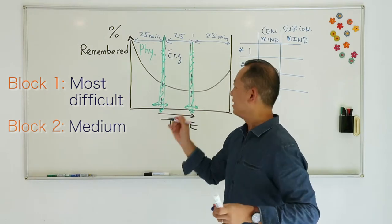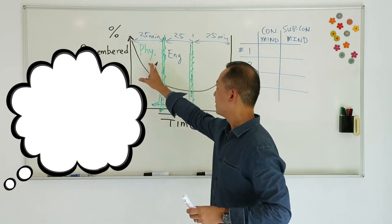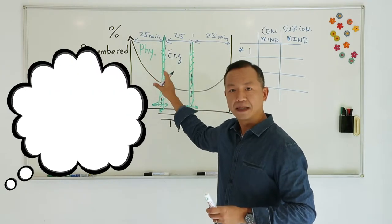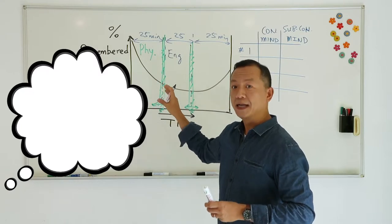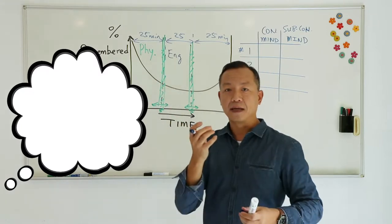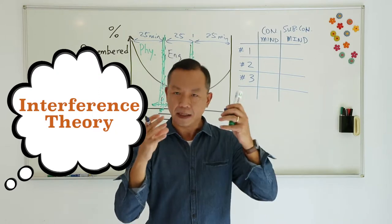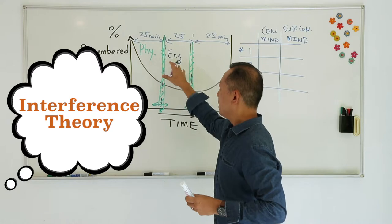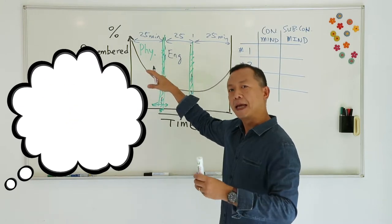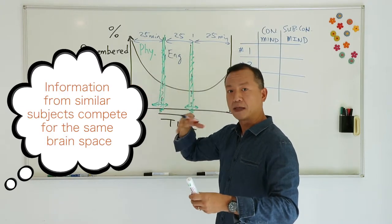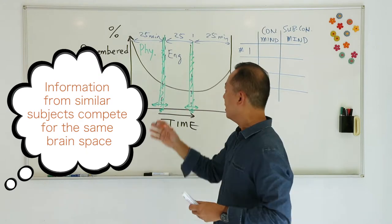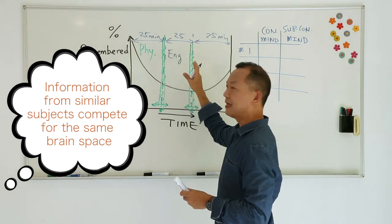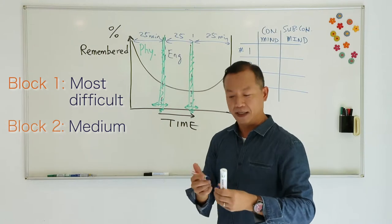Now, keep in mind one thing. It's not a good idea to study the same subject or similar subjects back to back. Because what happens is there's a theory called interference theory. If you study the same subjects, now the information essentially from the same subject or similar subjects competes for the same information. So you want to study different subjects. You want to change mental activities.